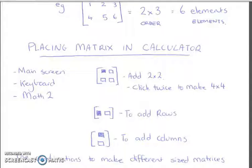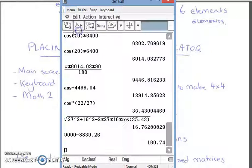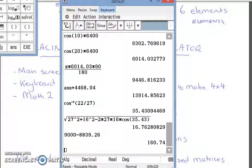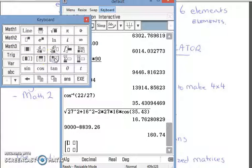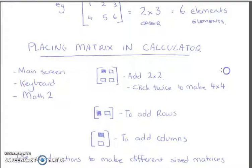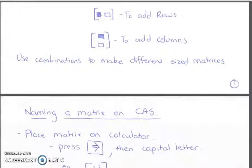Placing the matrix in the calculator: if we go to the main menu, go to keyboard and then math 2, there's all these buttons here. You can add square matrices, add columns, double click to make them longer, double click to make them wider. You should be pretty familiar with putting those into your calculator. You can make any combinations using these buttons.